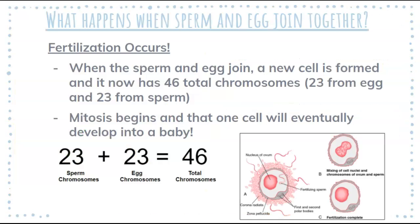Someday, a long time from now, when you're in a loving committed relationship with a job and an education, sperm and egg may come together and a new cell is formed with 46 chromosomes — 23 from the egg and 23 from the sperm, so 23 plus 23 equals 46. Once fertilization has happened, you have a zygote. That one-celled zygote is going to go through mitosis, making copies and copies and copies, until all those cells become brain, heart, lungs, legs, eyes, nose, and all that stuff. After countless rounds of mitosis, you end up with a fully formed baby.